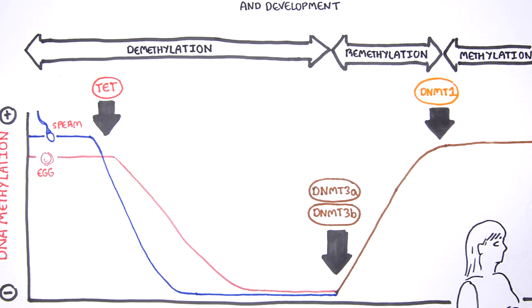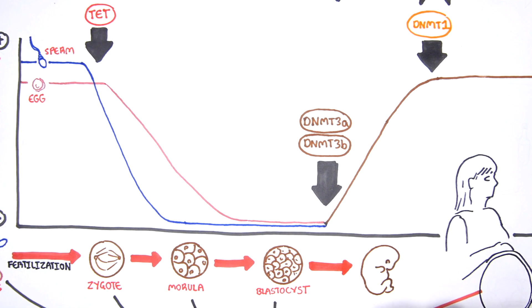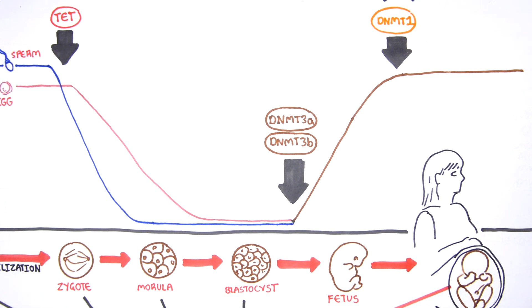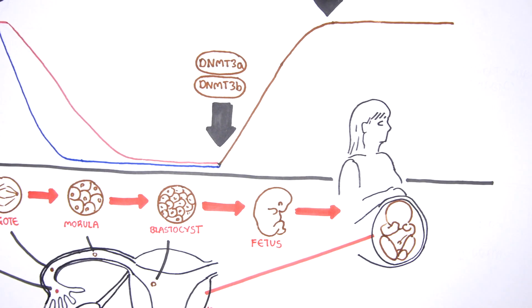Although the DNA methylation patterns are relatively stable, changes in methylation can potentially occur during early development due to environmental influences.